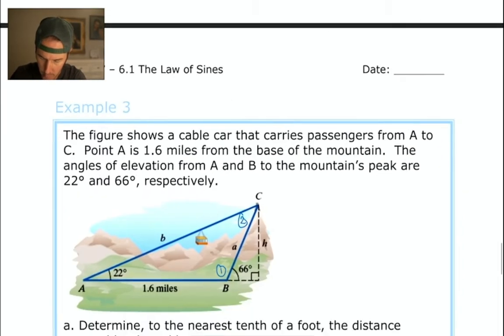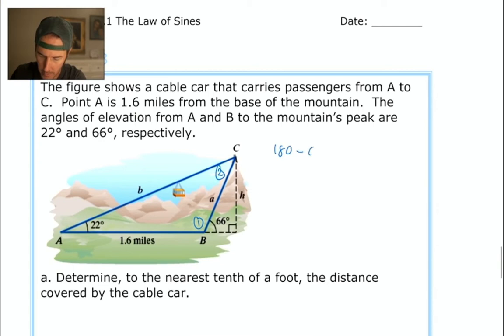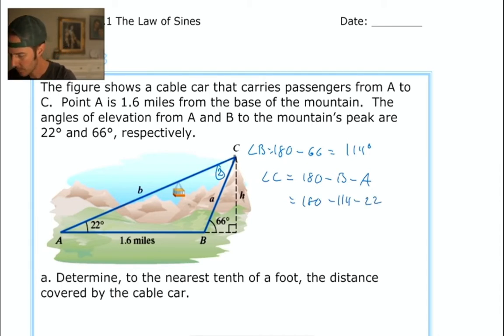Let's do subtraction. I've got 180 minus 66. Angle B is equal to 180 minus 66, which is 114 degrees. You can write that into your diagram if you like. And then let's also find angle C. C is equal to 180 minus angle B minus angle A, which is 180 minus 114 minus 22. That is 44 degrees. Very nice.